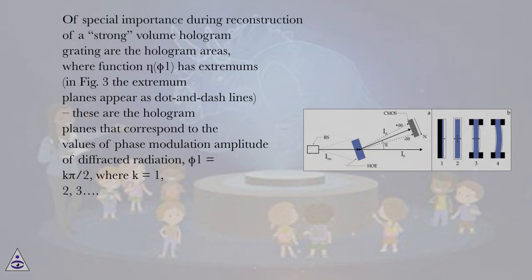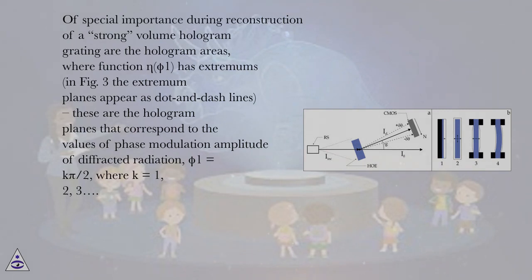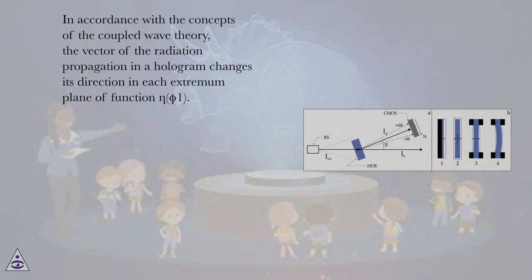In figure 3, the extremum planes appear as dot-and-dash lines. These are the hologram planes that correspond to the values of phase modulation amplitude φ₁ = kπ/2, where k = 1, 2, 3. In accordance with the Coupled Wave Theory, the vector of the radiation propagation in a hologram changes its direction in each extremum plane of the function η(φ₁).